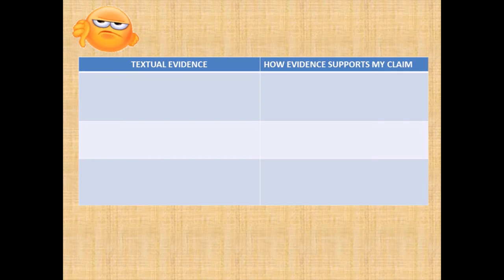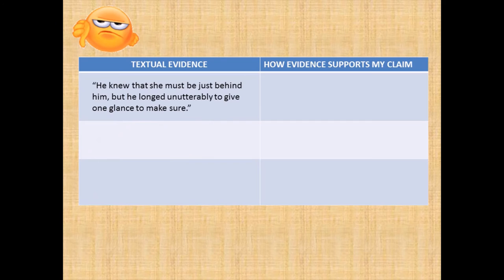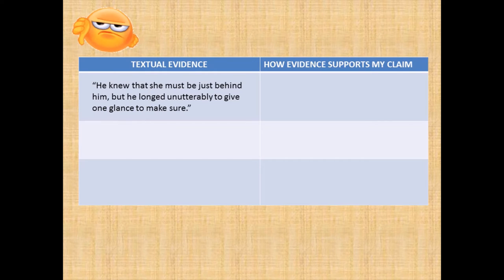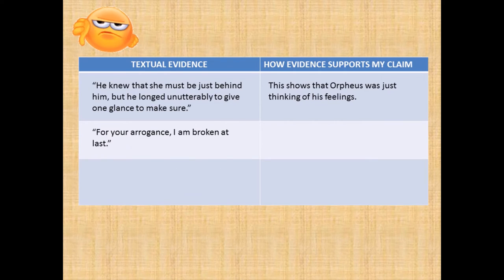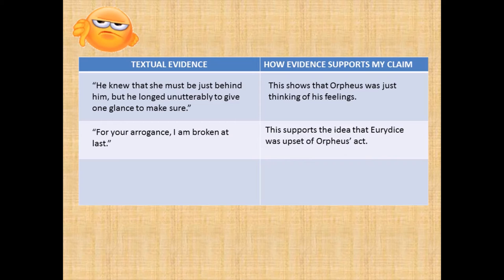You can also open your textbook to check for evidences. The first evidence is: 'He knew that she must be just behind him, but he longed unutterably to give one glance to make sure.' This shows that Orpheus was just thinking of his own feelings. And the second evidence from the poem is: 'For your arrogance, I am broken at last.' This shows that Eurydice was upset about Orpheus' action.